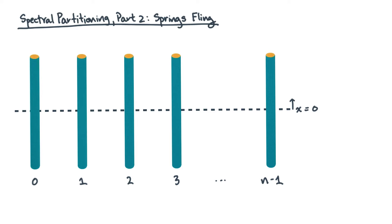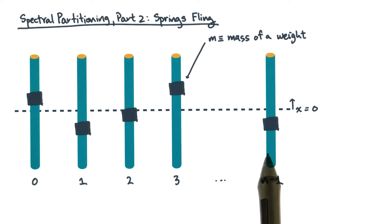Now suppose each stick has a weight attached to it. And let's suppose each weight has a mass of little m. We're talking about a physical system, so the mass would be measured in, say, kilograms. And for simplicity, let's assume all the weights have the same mass.